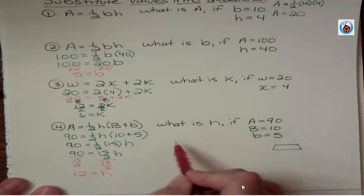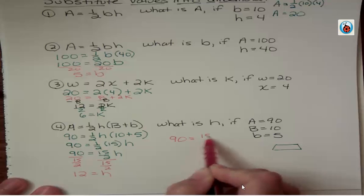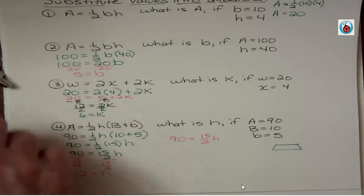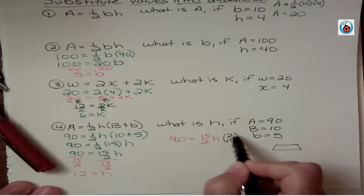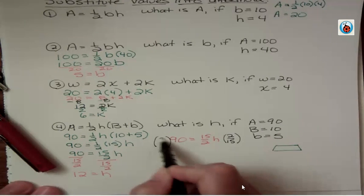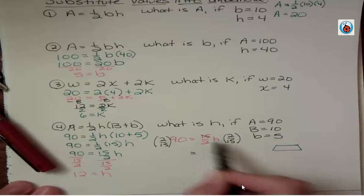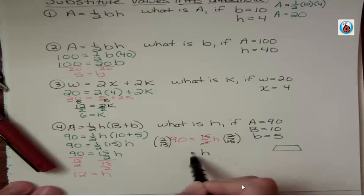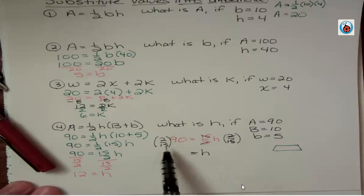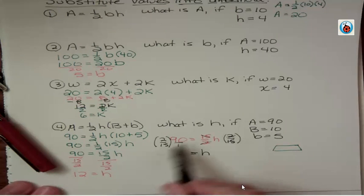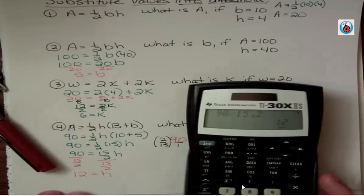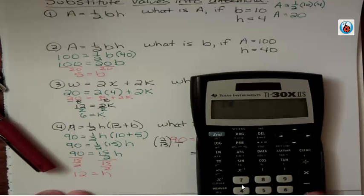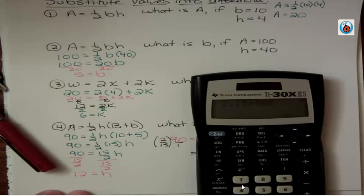The other way: if you want to make the coefficient of h be 1, multiply both sides by 2/15, the reciprocal. These cancel, leaving h, and on the other side we have 2/15 times 90. We could cross-cancel without the calculator, or use the calculator: 2/15 × 90 = 12. Same answer.